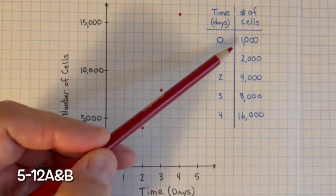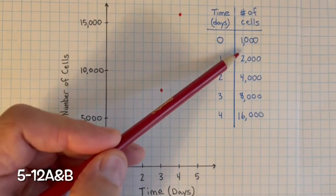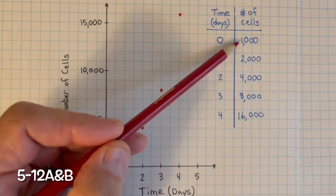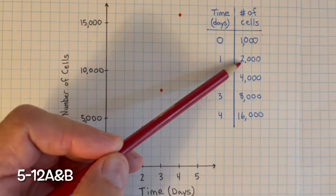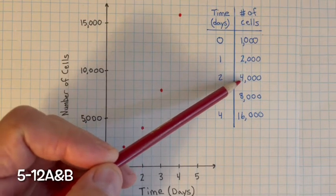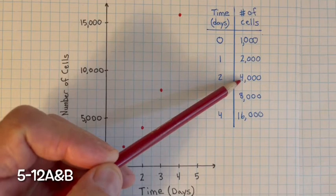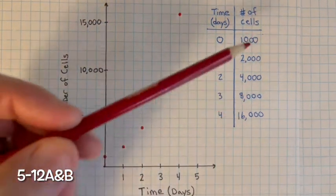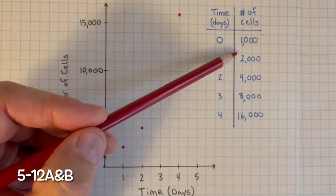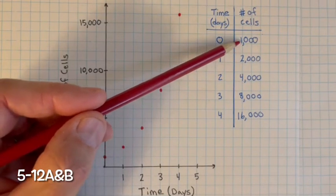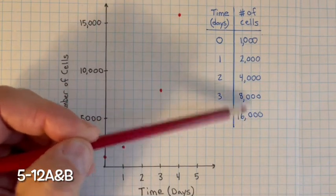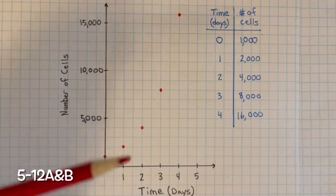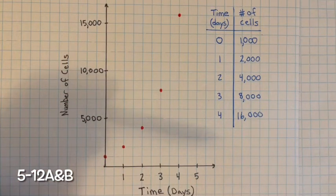We know that it's increasing exponentially each time — it's not at a constant rate. Initially she had 1,000 cells, then the next day 2,000, then it doubled again to 4,000, then doubled again and again. This is not a linear equation because it's not at a constant rate — not 1,000 each day. So we know it's going to be curved.